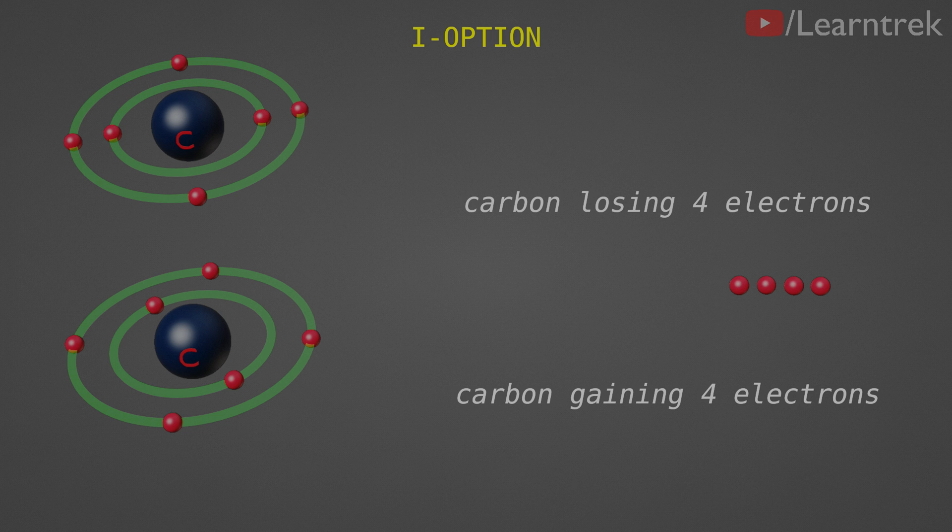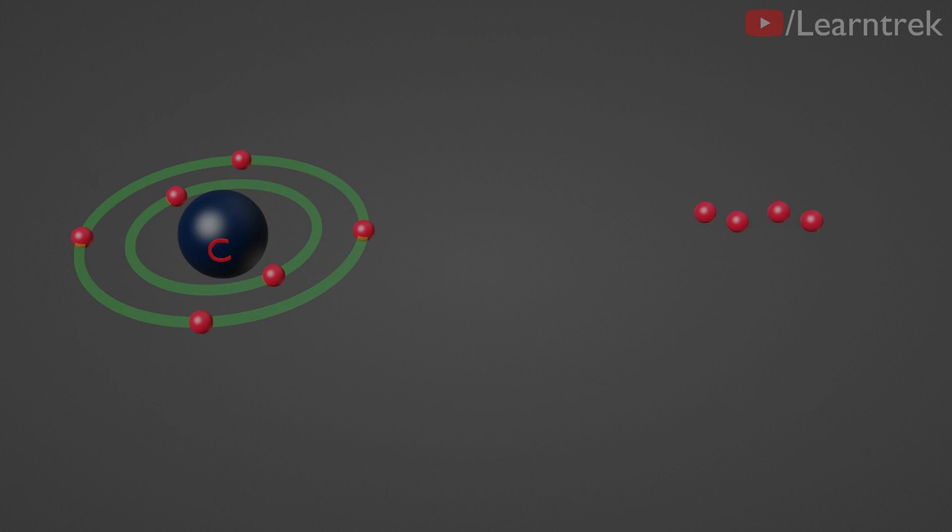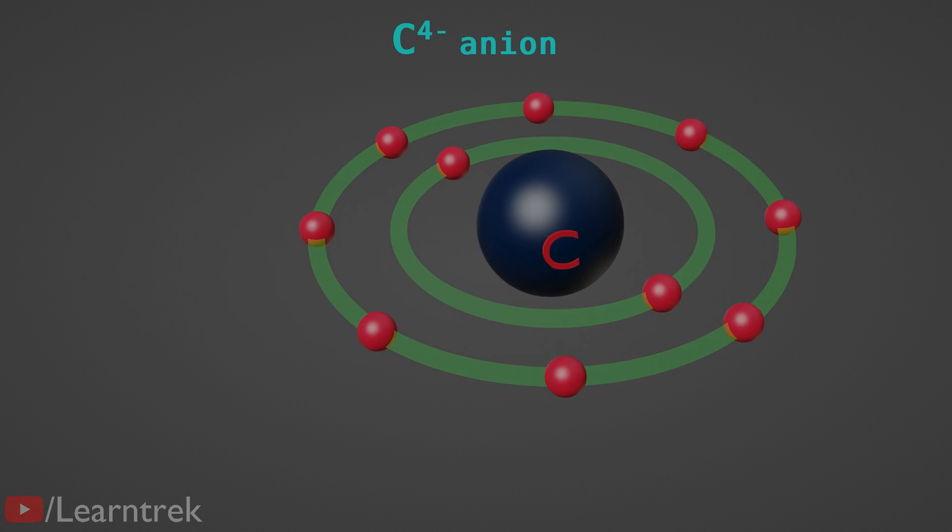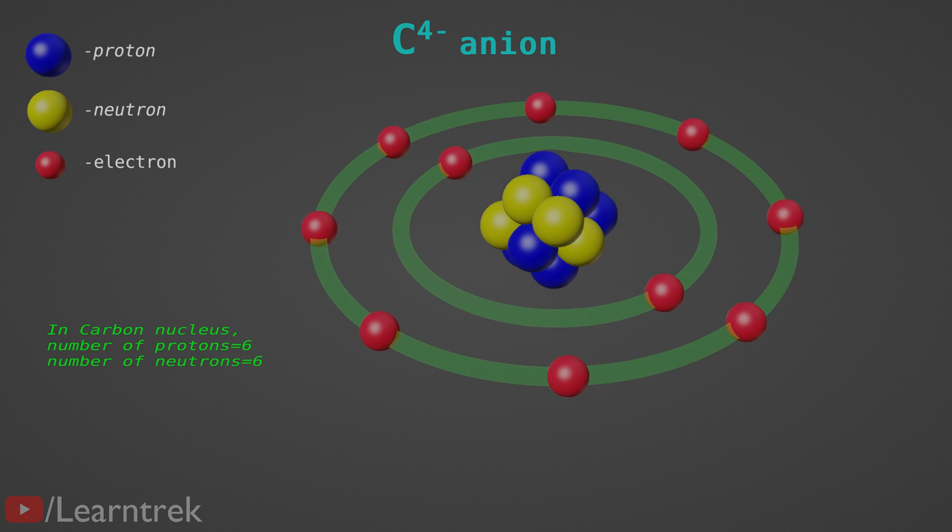If carbon is going to lose or gain valence shell electrons, then it could gain 4 electrons to become a C4 negative anion. But it would be difficult for the small nucleus with 6 protons to hold 10 electrons.